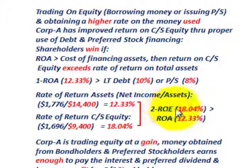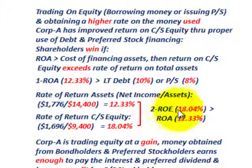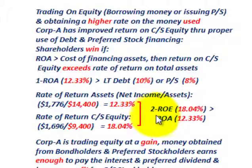That's what we mean by trading on equity — borrowing money or issuing preferred stock to get a higher rate on the money used. That takes care of our example covering both determining the rate of return on common stock equity and trading on equity.